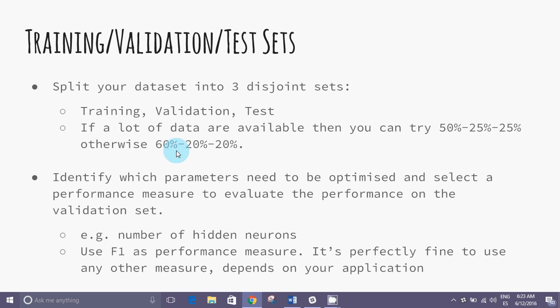As we can see in the slide, we have two examples. Within the structure of the model we identify which parameters shall be optimized. For example, a neural network wanted to optimize the number of hidden neurons. And also choose a performance measure to evaluate on the validation set. For example, we can choose F1 as a performance measure. Remember that in the previous module we defined the F1 score as the harmonic mean between precision and recall, two other key measures.